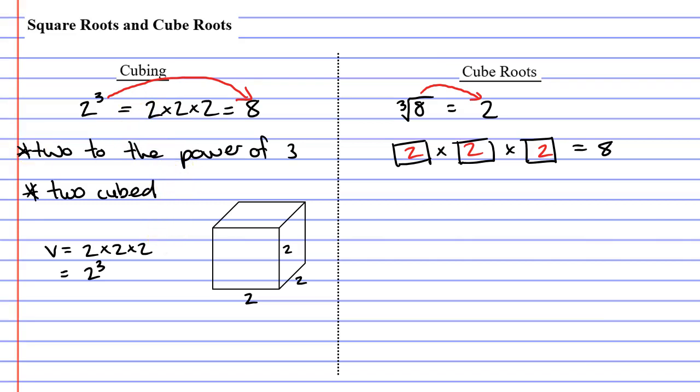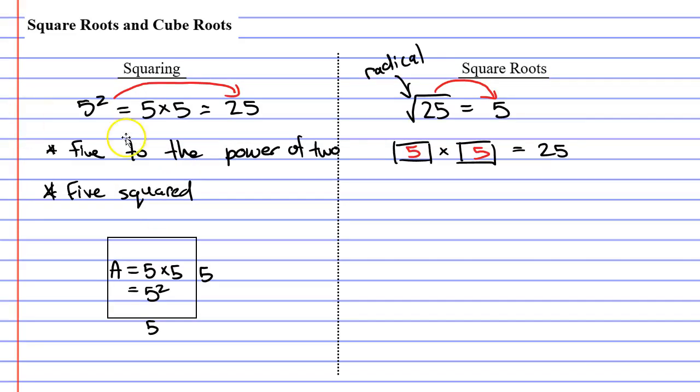I think it would be important for us to look back at square roots. Notice that when you had a square root, you didn't have a little number next to the radical. So we had the square root of 25 equaled 5. You can actually technically put a little 2 there if you want. The little 2 meaning that what 2 numbers, when multiplied together, will equal 25.